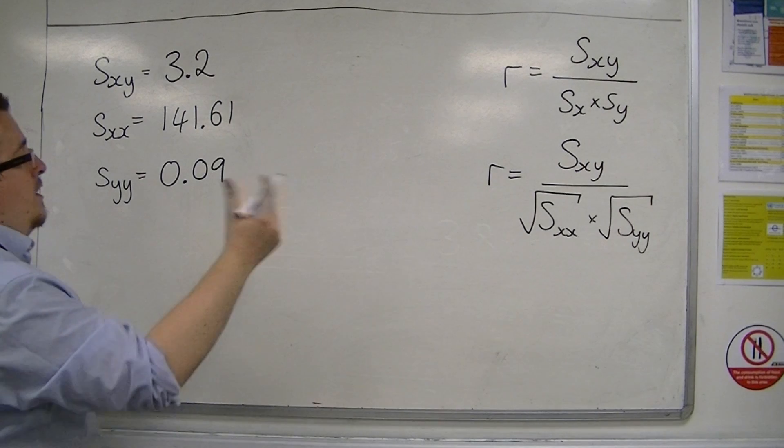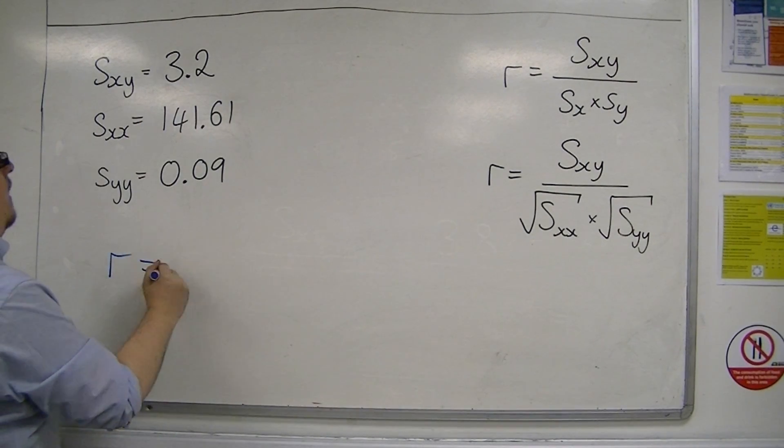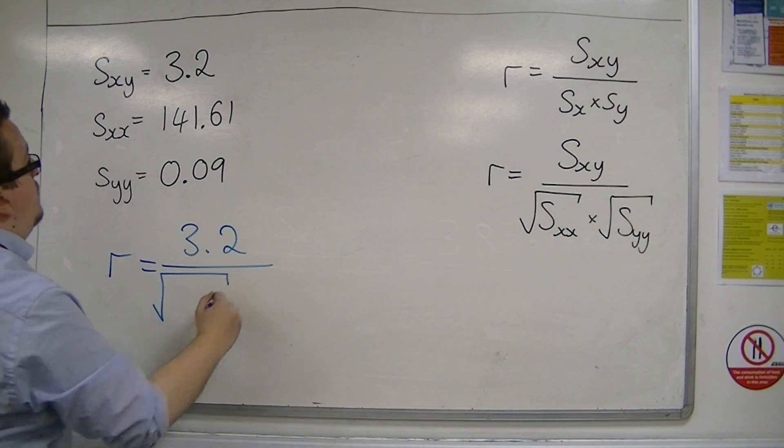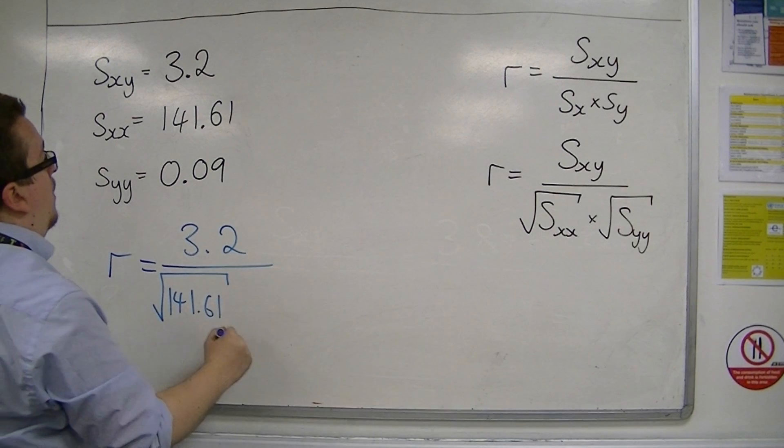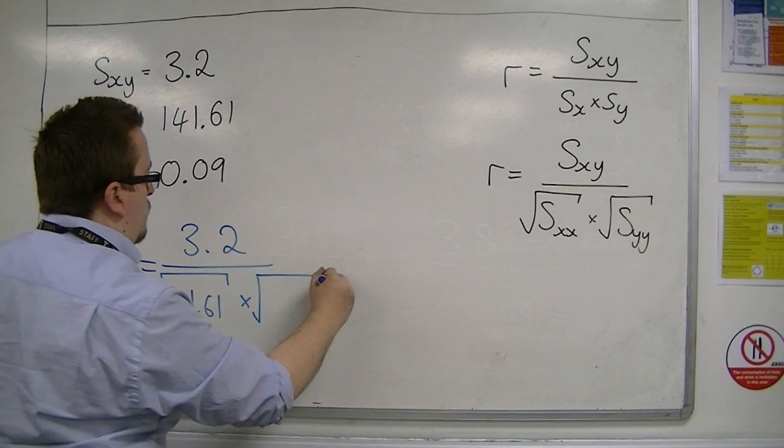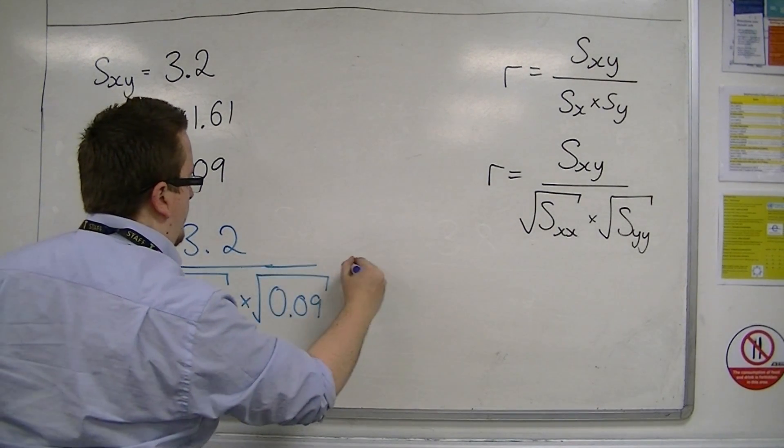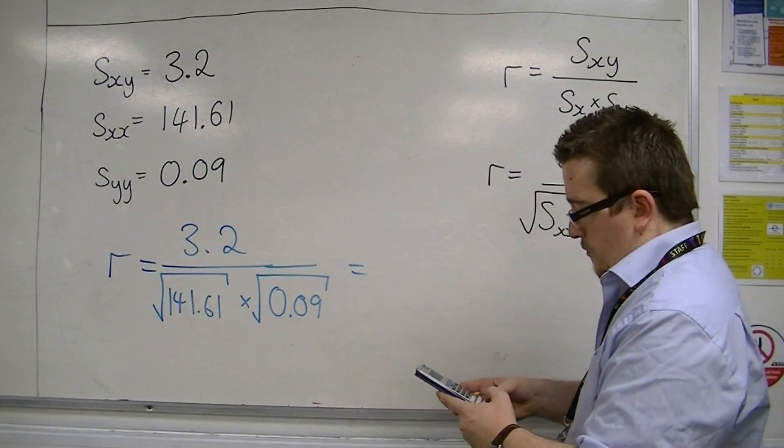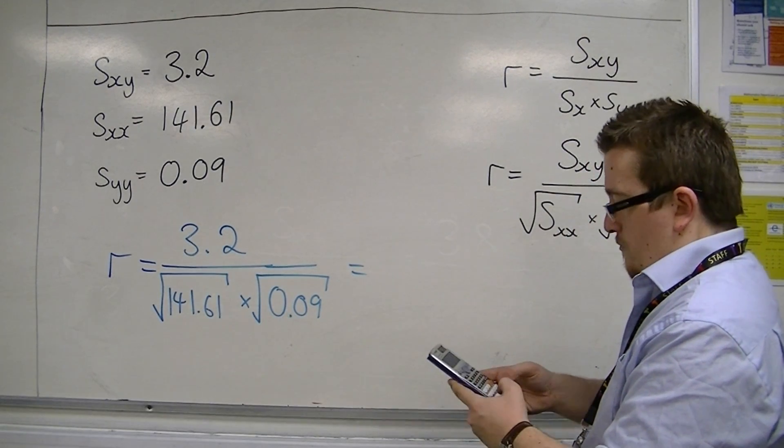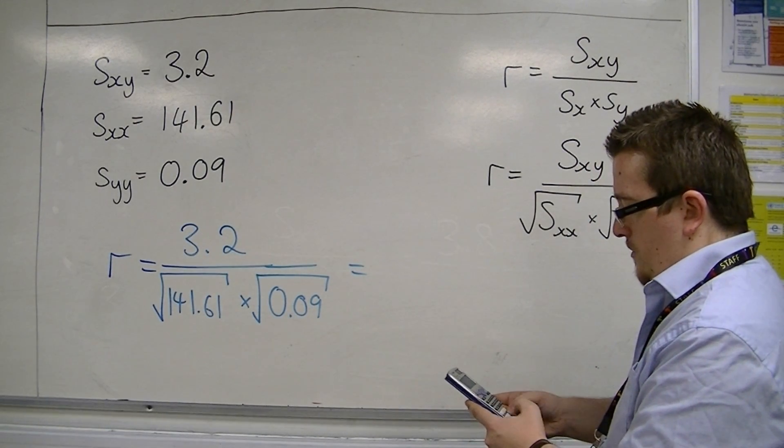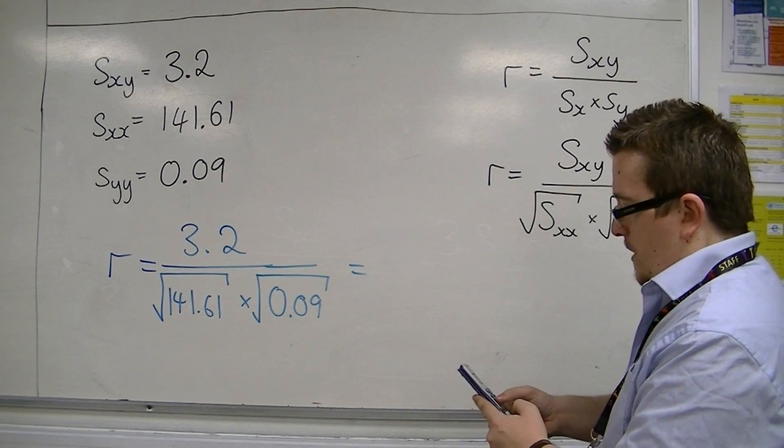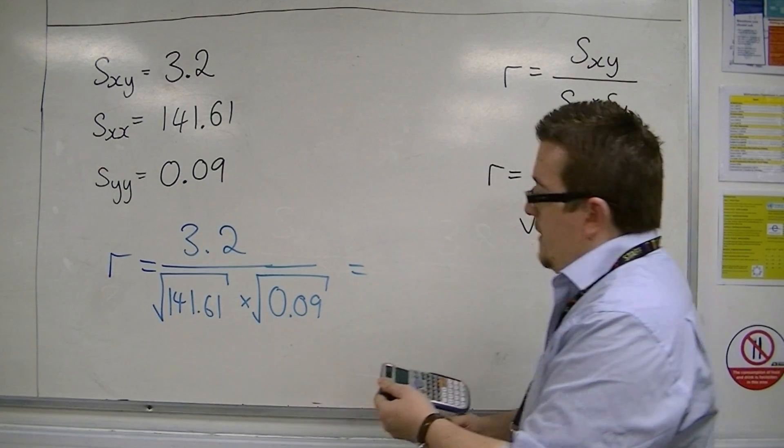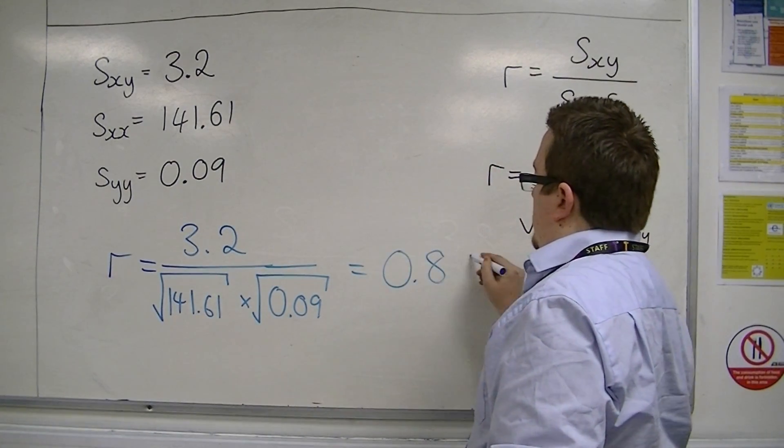So, if I'm going to work with the calculation here, R is going to be 3.2 over the square root of 141.61 times by the square root of 0.09. And if you throw all of that into your calculator, 3.2 over the square root of 0.09, and you get 0.896 to three decimal places.